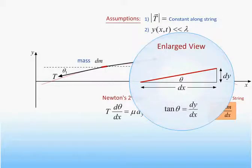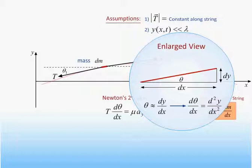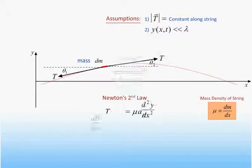Now, tangent of theta is just equal to dy/dx. Since we've assumed theta to be small, we can approximate tangent theta as just theta. Therefore, we can replace d theta/dx in our expression by the second derivative of y with respect to x. On the next slide, we will obtain the desired wave equation by rewriting this expression in terms of the second derivative of the displacement with respect to time.